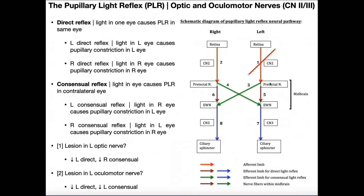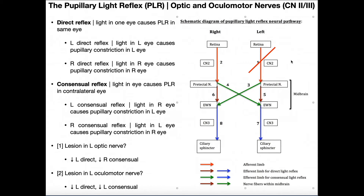If we obliterate the left cranial nerve 2, we lose the left direct reflex and we lose the right consensual reflex. This is just for the left optic nerve — if we flipped this and did the right optic nerve, these directions would just flip. So if we lesioned the right optic nerve, we would lose the right direct reflex and the left consensual.